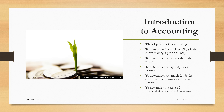Then we need to determine how much funds the entity owes and how much is owed to the entity. What are our liabilities — how much do we owe? Last but not least, we need to determine the state of financial affairs at a particular time in the business. In summary, this is looking at our balance sheet or statement of financial affairs at a particular time. Whereas the profit and loss or income statement looks at the series of transactions over a period of time, usually one year, the financial affairs looks at the position of the business at a particular point in time.